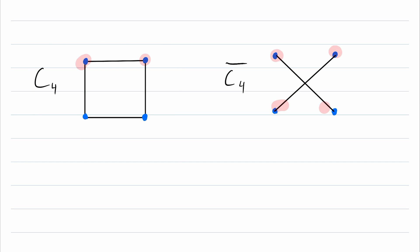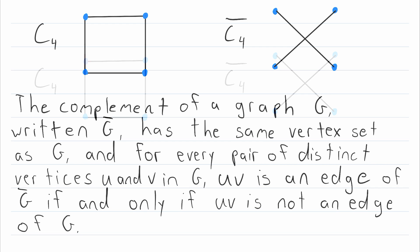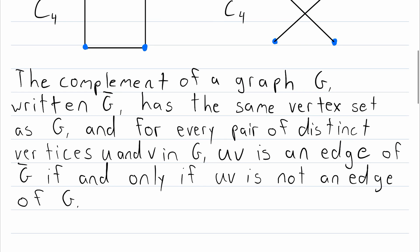It has the same vertex set, and it has, in a way, the opposite edge set. And here is a more rigorous definition. The complement of a graph G, written as G with a line over it, has the same vertex set as G, and for every pair of distinct vertices U and V in that original graph G,